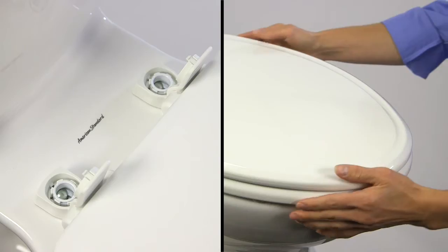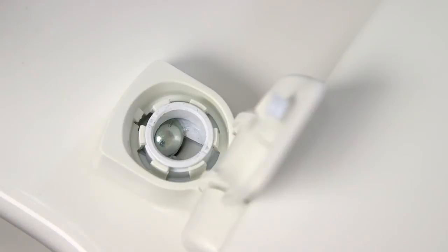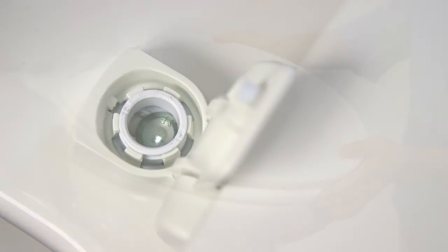Since the stay tight nuts have only been lightly finger tightened, there should be enough play in the seat to move it back and forth. Position it for the best possible fit on the toilet bowl.